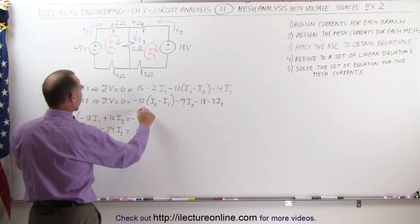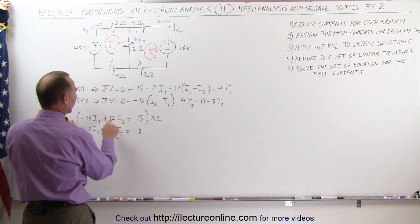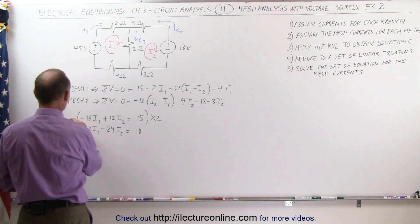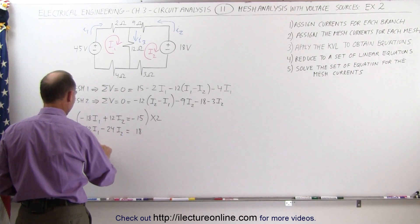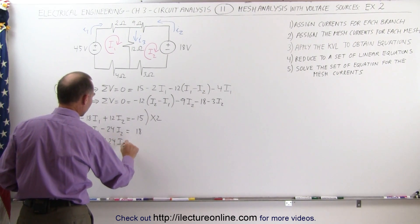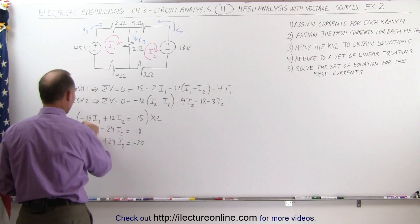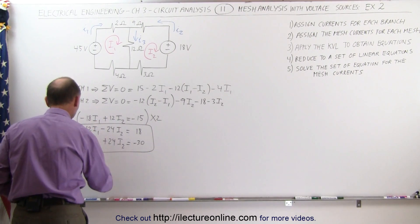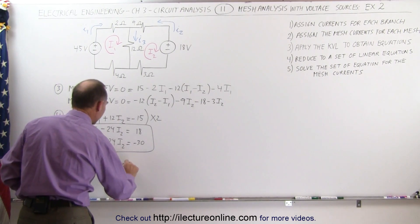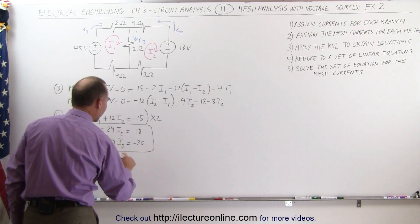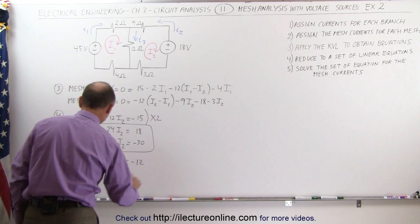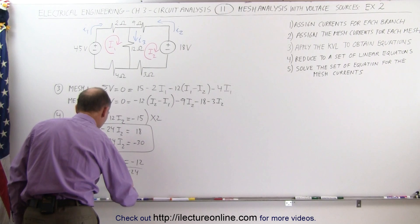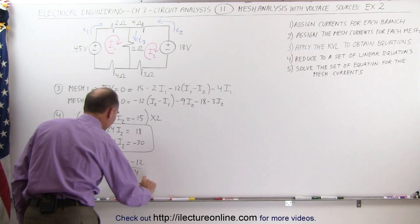When I take the first equation and multiply it by 2, the 12 I2 becomes plus 24 I2. Adding to the second equation with minus 24 I2, the I2 terms drop out. This gives minus 36 I1 plus 24 I2 equals minus 30. Adding the two equations together: minus 36 plus 12 is minus 24 I1, the I2's drop out, and minus 30 plus 18 is minus 12. Dividing both sides by minus 24, I get I1 equals 0.5 amps.